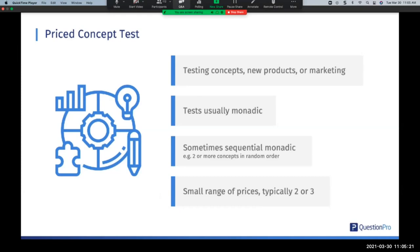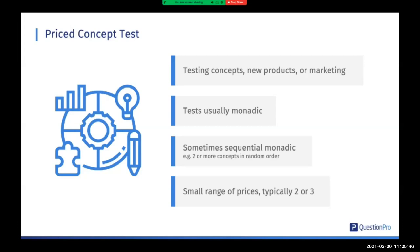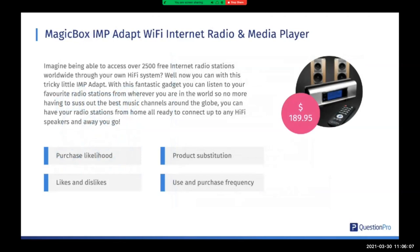At one end of the spectrum, we have things that just look at price, like Gabor-Granger. At the other end, we have things that give us more diagnostics. We're going to run through the range — why we would choose one, what those techniques involve, their strengths and limitations. We're going to start with something which on one hand is very straightforward but on the other gives you a lot of diagnostics — the priced concept test. We might be testing a new concept, a new product, or some new marketing. Ideally, the tests are going to be monadic — every participant only sees one sell, one price.